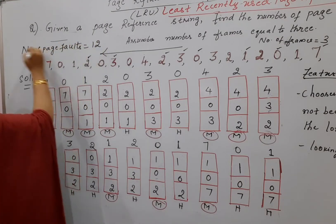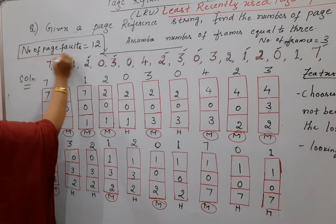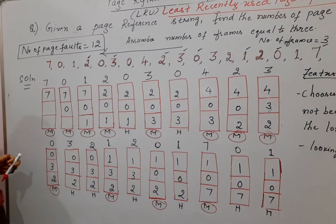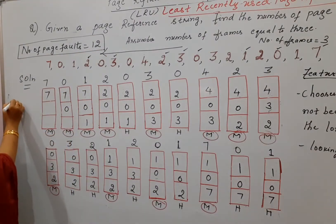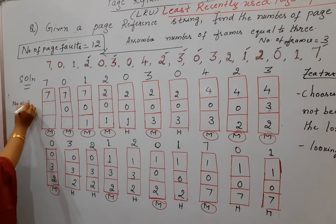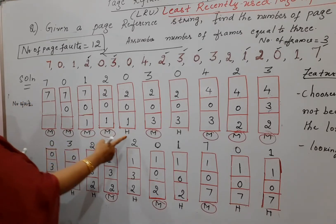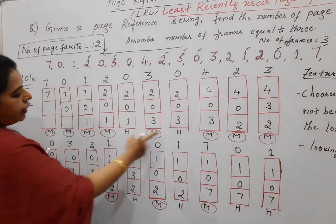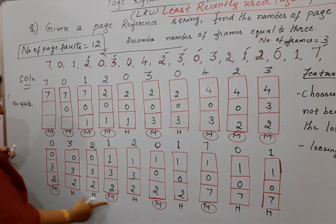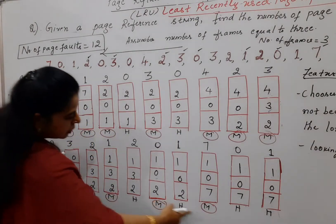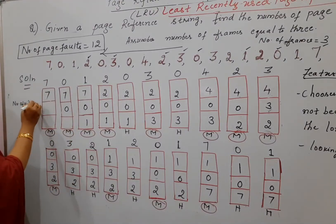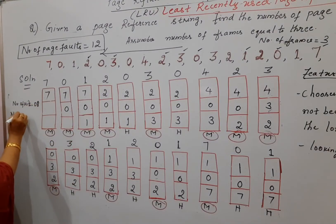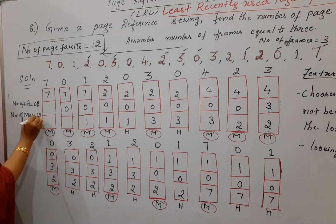Writing the solution in the box: number of page faults equals 12. You can also calculate the number of hits and misses. Counting the H's: 1, 2, 3, 4, 5, 6, 7, 8 — so number of hits is 8. Adding 12 and 8 gives 20, which matches the total reference string length. Number of misses is 12, which is also the number of page faults.